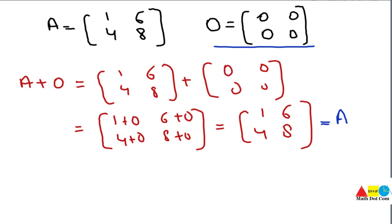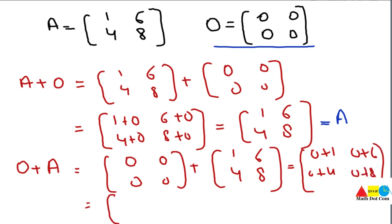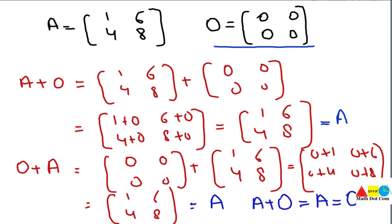We also check that adding the zero matrix first gives the same result: O plus A, where O is the zero matrix and A is [1, 4; 6, 8]. Applying the same rules — 0+1, 0+6, 0+4, 0+8 — we get [1, 4; 6, 8]. The condition is satisfied. So A + O = O + A = A, meaning the order doesn't matter — the zero matrix does not change the value of the original matrix.